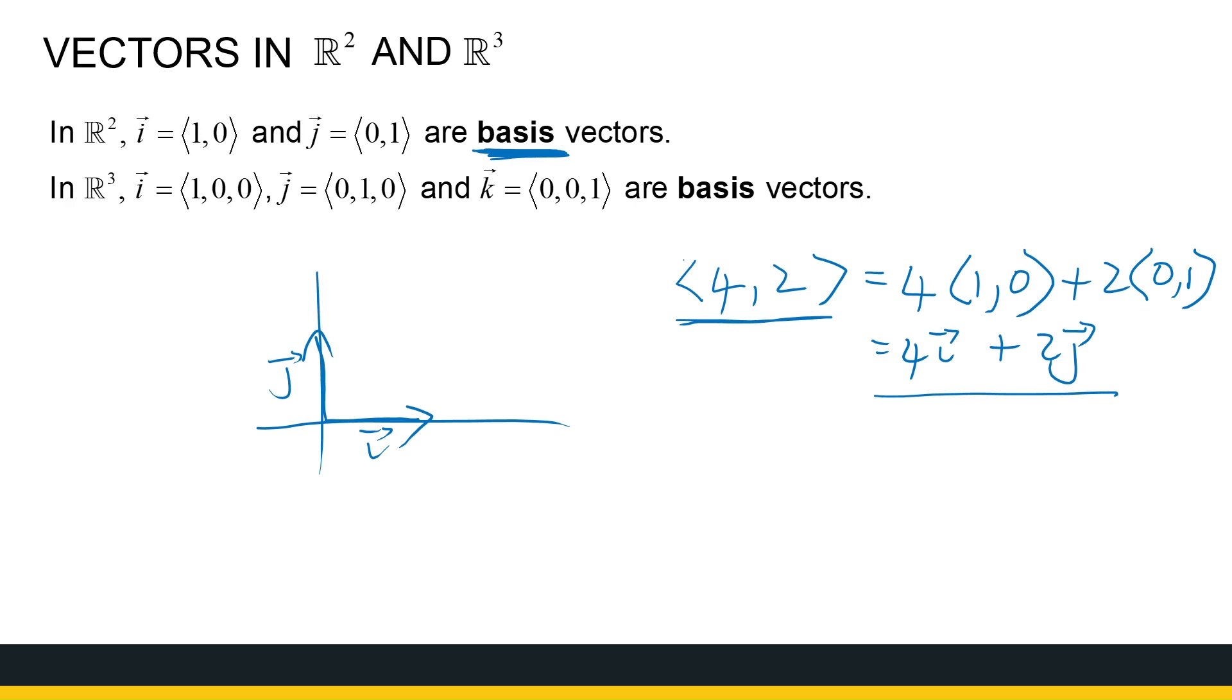So, these are also different notations. So, just be aware that writing it in terms of its components, i and j is still a notation for a vector, and similarly in R3.